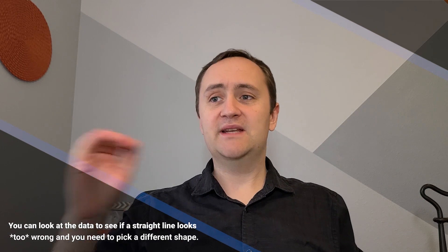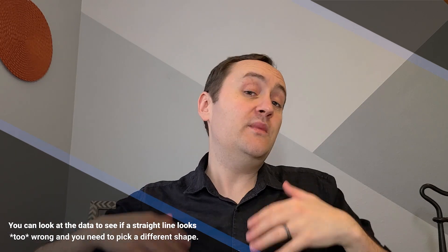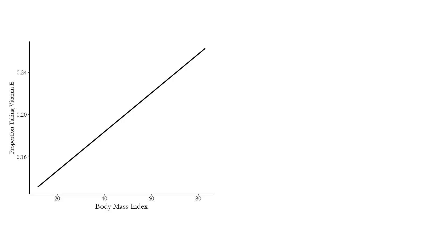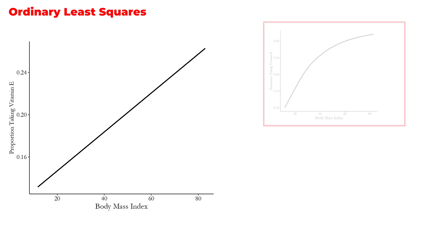That shape doesn't necessarily have to be a straight line, although often it is. We might say this relationship is going to be a straight line relationship. Instead of the nice curvy line we have for LOESS, we can just ask: what's the best straight line to fit? Here's the example of the ordinary least squares curve, again looking at the relationship between the proportion of people who take vitamin E and their body mass index. You can see that we've lost some detail — instead of that curve from LOESS, we instead have a straight line.